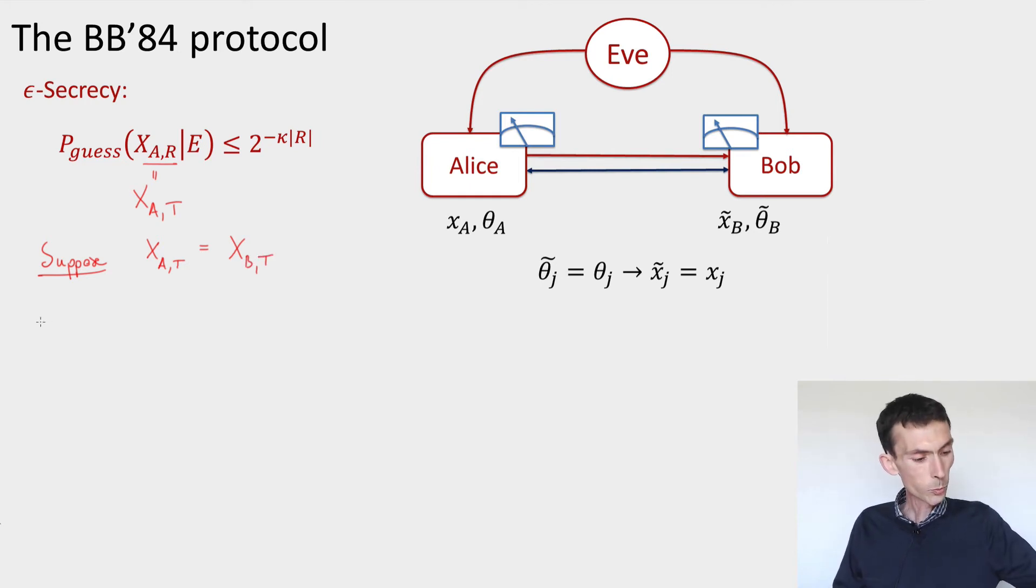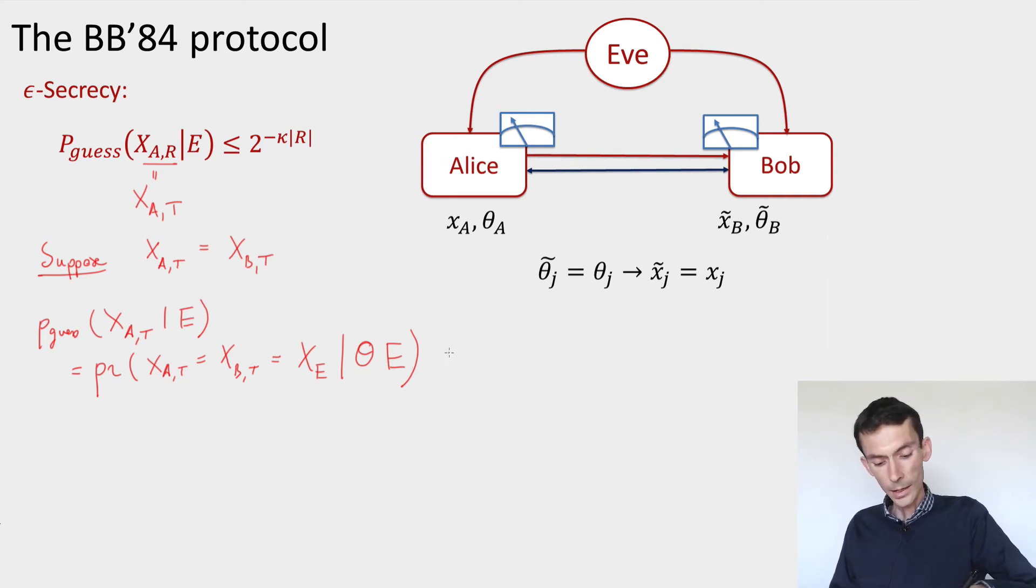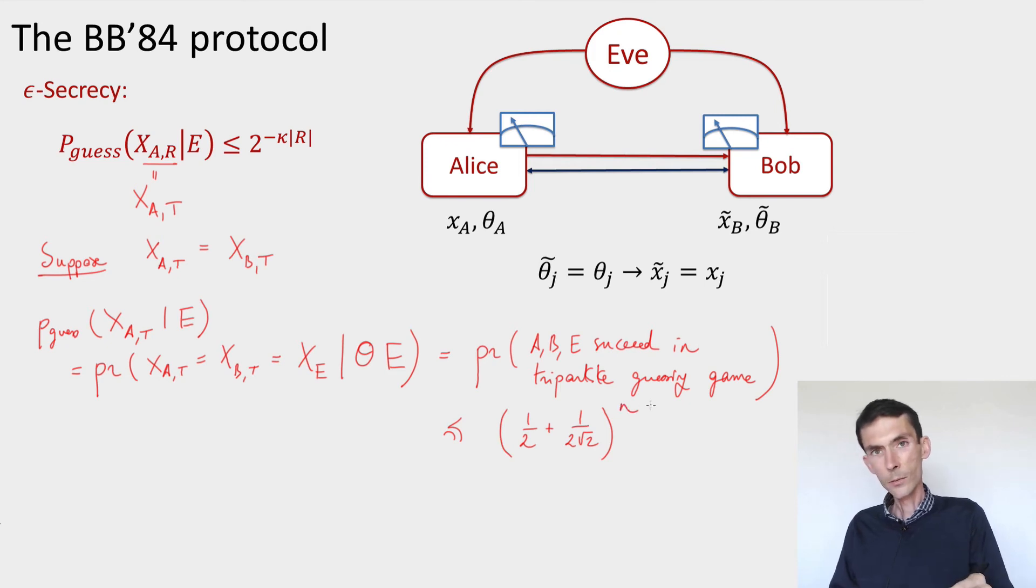In this case, what is the probability that Eve guesses the string X_AT? This is the probability that X_AT equals X_BT, because I assumed that the test passes, equals some guess X_E that Eve makes based on the bases she learned about and her side information E. Here you should recognize something. It's exactly the probability that A, B, and E succeed in the tripartite guessing game. We saw that this is at most 1/2 + 1/(2√2) times the number of rounds, which is n. This is approximately 2^(-0.23n).